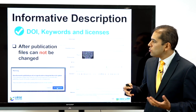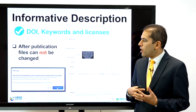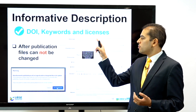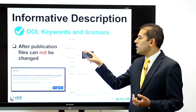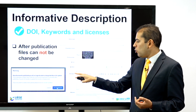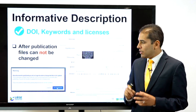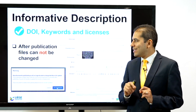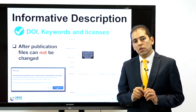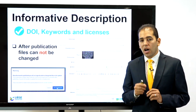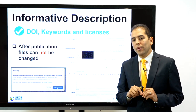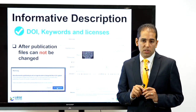Once your files are uploaded, you will have information about the DOI, keywords, and licenses. Zenodo issues a DOI after publication, and you'll have a full description including the publication type, DOI, name, publication date, title, authors, and description. Note that Zenodo does not allow you to change the dataset after it is published — this is a disadvantage compared to, for example, the Harvard Dataverse.